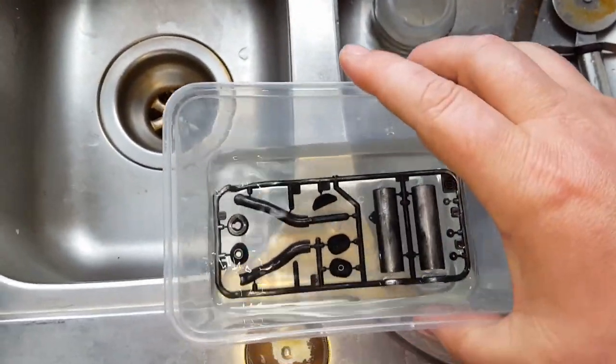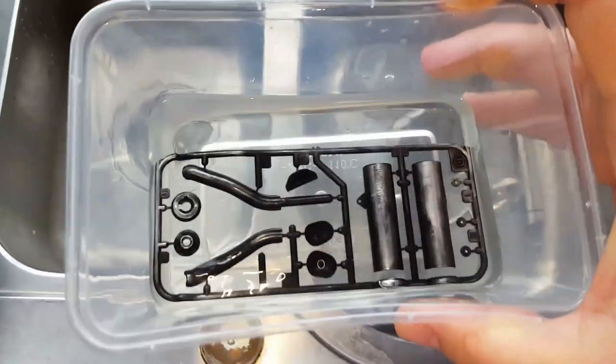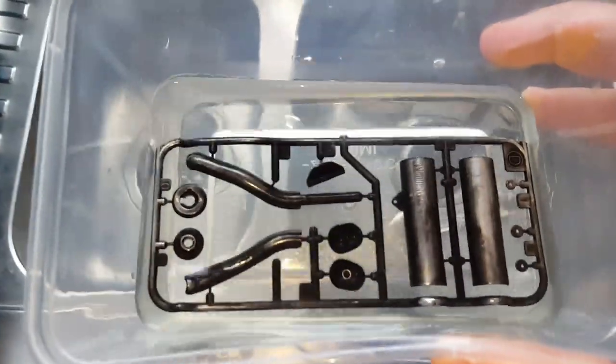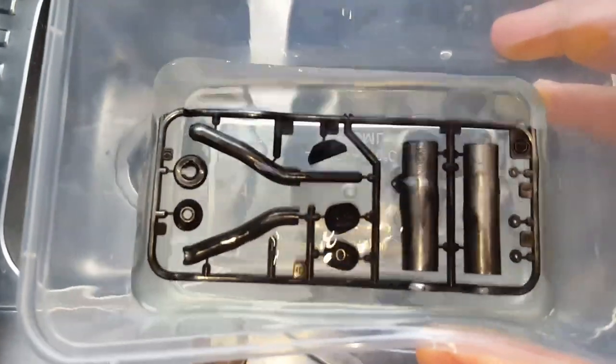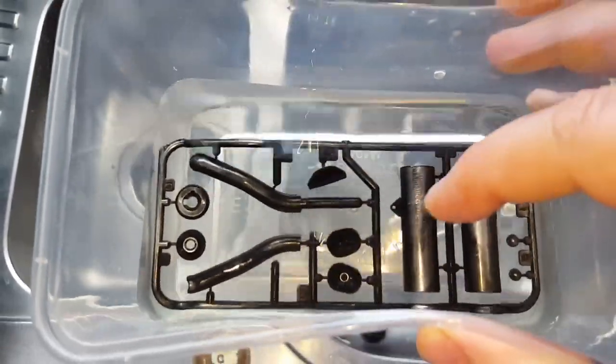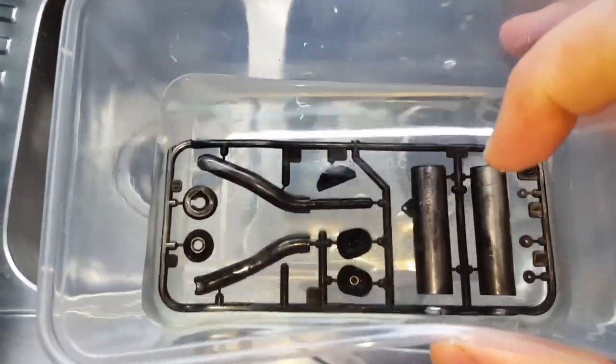The process is very simple and that's what you need to do when you get these chrome parts that don't look very realistic. Remove the chrome off them before you even start building.